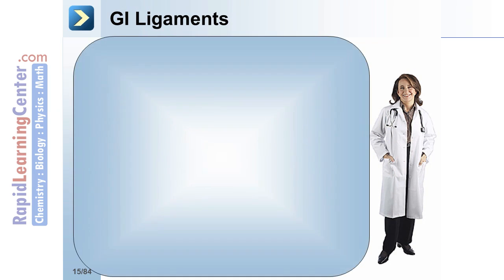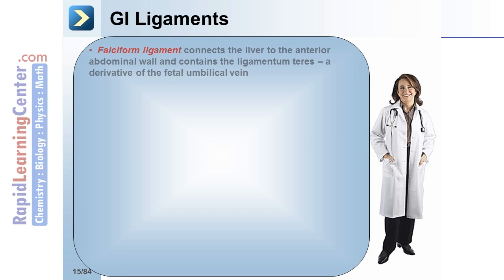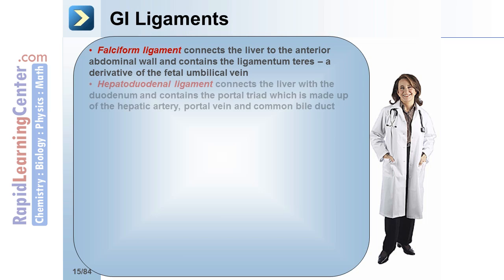There are a number of significant ligaments within the abdomen, including the falciform ligament, which connects the liver to the anterior abdominal wall and contains the ligamentum teres, a derivative of the fetal umbilical vein. The hepatoduodenal ligament connects the liver with the duodenum and contains the portal triad, which is made up of the hepatic artery, portal vein, and common bile duct.